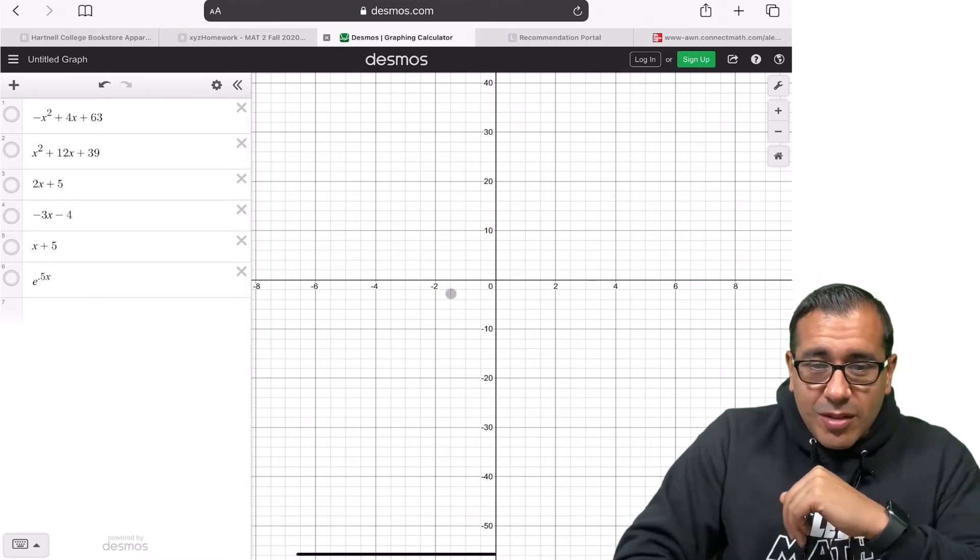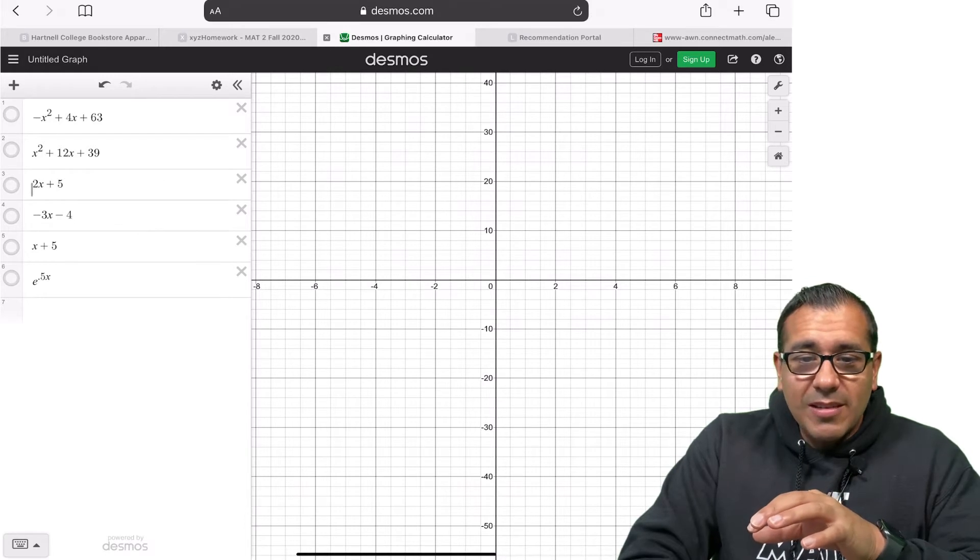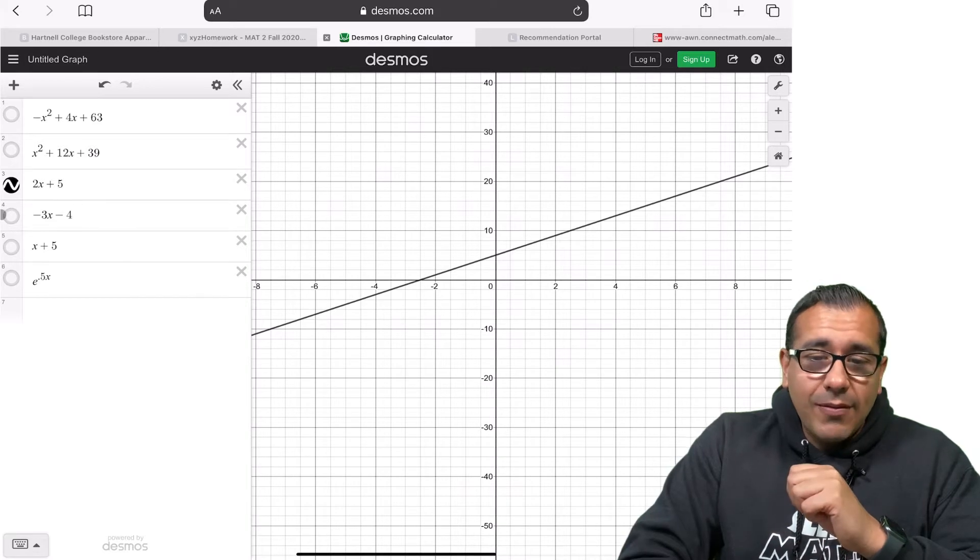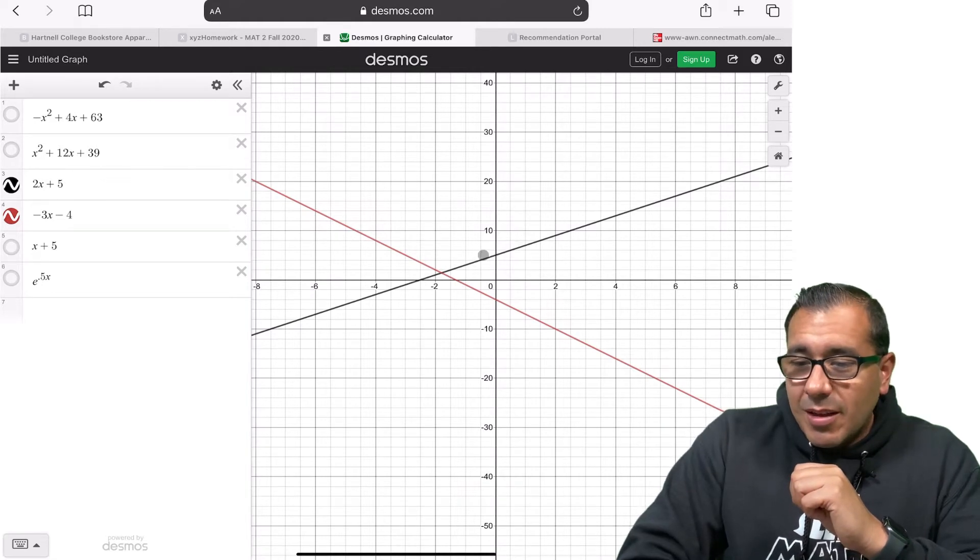So for this first pair of functions, I'm going to look at linear functions here. So I have 2x plus 5, so I graph that there. And then I have negative 3x minus 4. So we can see here that Desmos does a nice job here.